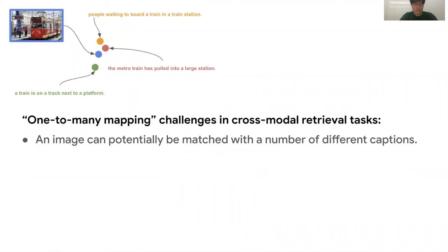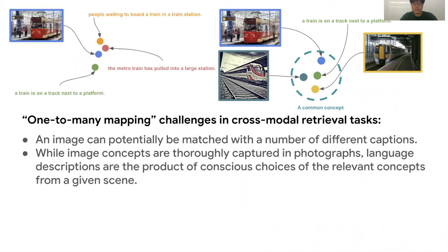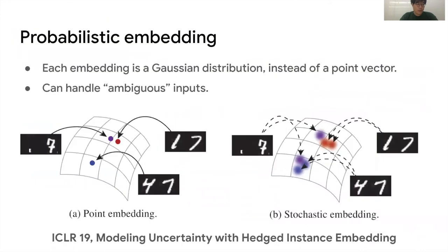Why does this happen? First, an image can be matched with a number of different captions. Also, captions are annotated by humans, so they can be produced by selective concepts in the image. As a solution, we use the Provest Embedding. Provest Embedding maps an input to a probabilistic distribution, not a point vector.